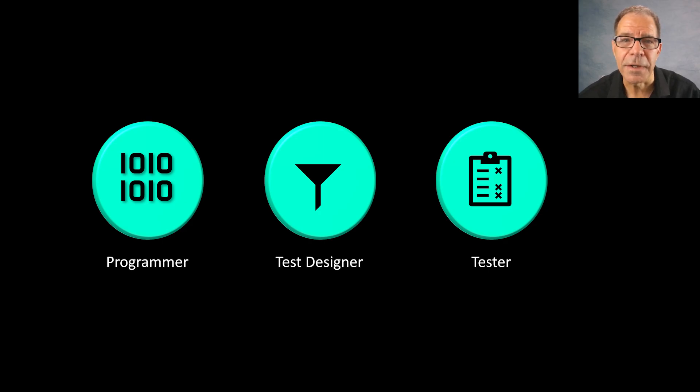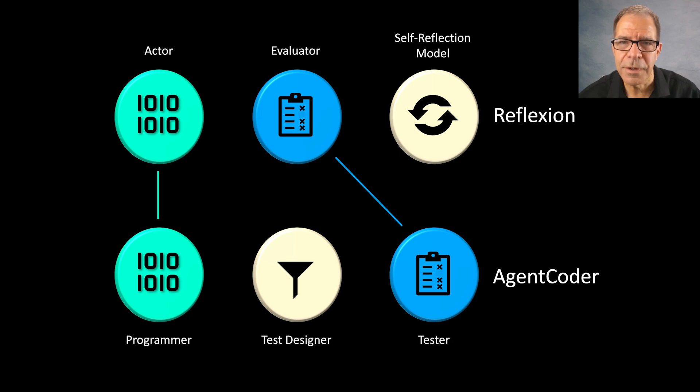Looking at these side-by-side, you can see how similar they are. Two of the three roles equate, but the third one is different. Specifically, Agent Coder enables continuous testing and refinement, which seems like a pretty nice idea.